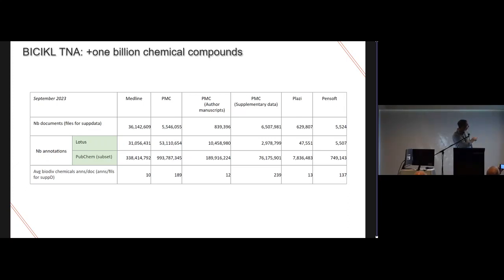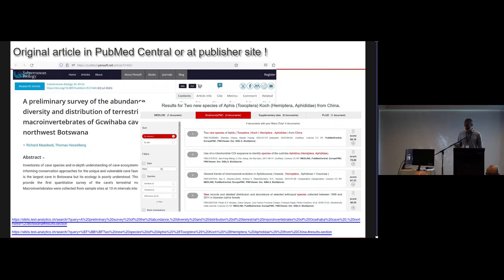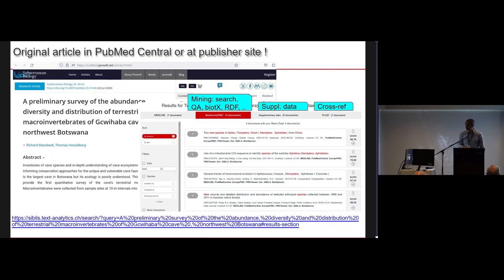With LOTUS and PubChem alone, we added about 1 billion new annotations. Of course you can use the system to read papers — either in PubMed Central or at publisher sites. The red view is what you'd see in our system, called Biodiversity PMC. If you searched for two new species of Aphis, for example, it would only be found in our collection, not in standard PMC. We have quite nice services: you can do question answering by entering a natural language question and the system will try to answer it.